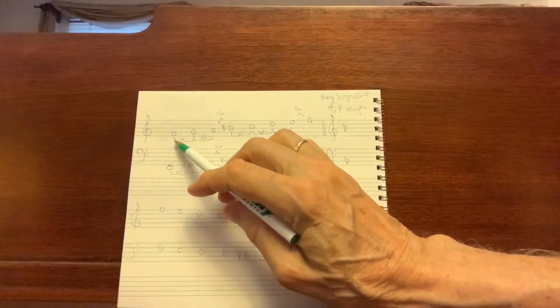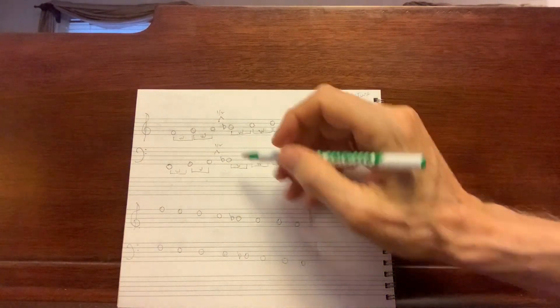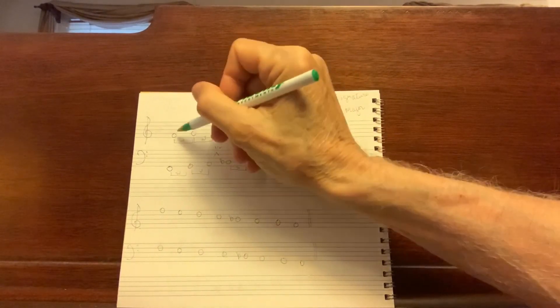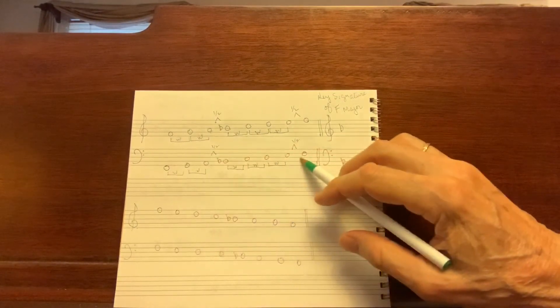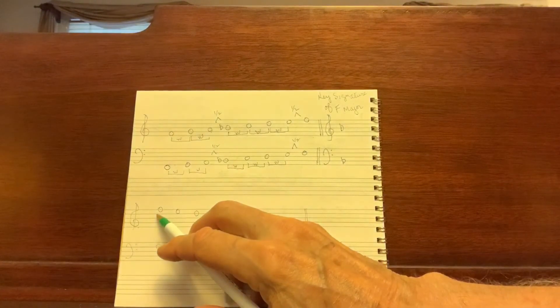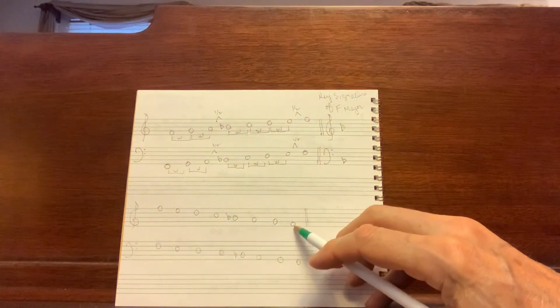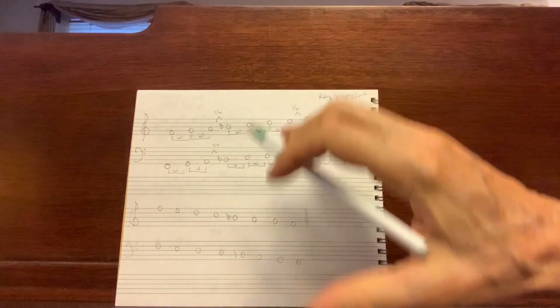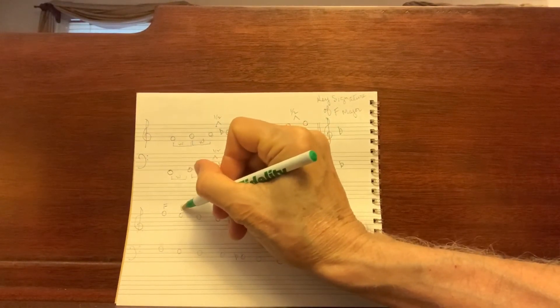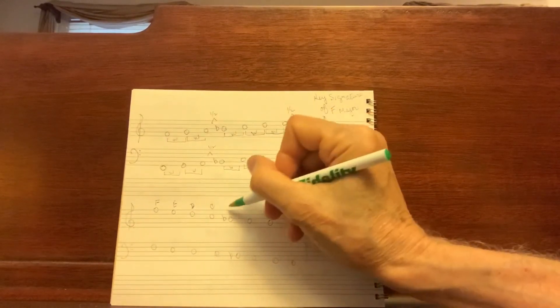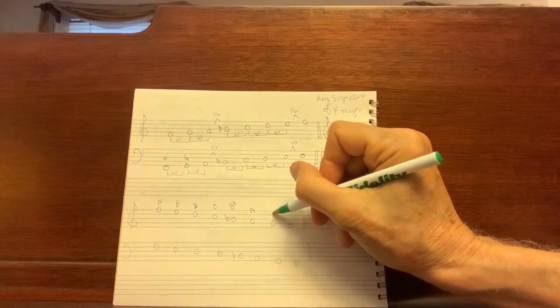All right. For homework, write treble clef ascending three times. Write in the key signature three times. Also, don't forget, as you're writing the notes, say the notes: F, G, A, B flat, etc. And then three times, write in the bass clef. Key signature included. And then coming down. This is very important because it's harder to read the alphabet going down. So make sure you do that three times and then the bass clef three times. And then when you're all done writing all the notes down, then just try writing the letter names in of all the notes. And this will just reinforce your knowledge of the notes. And wherever there's a note, just write in the names. No harm done. It's just information that helps you out.